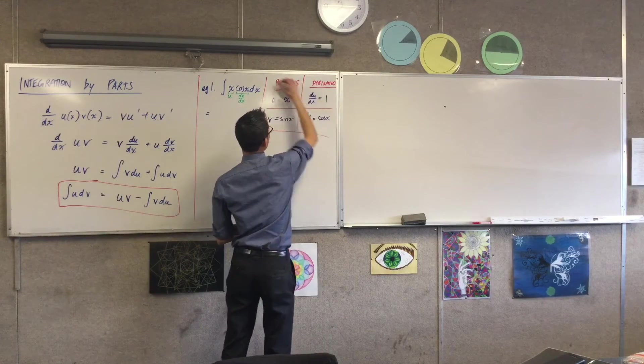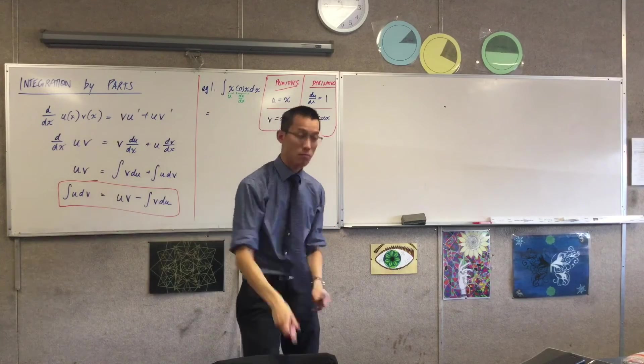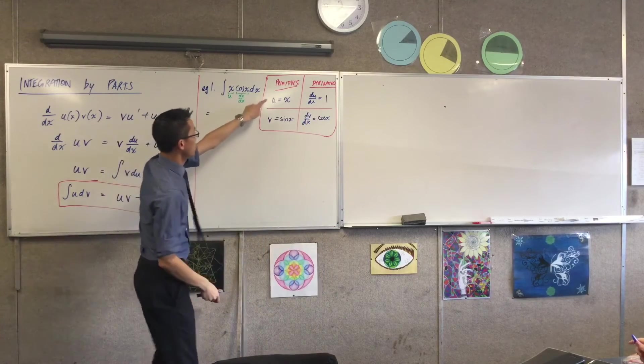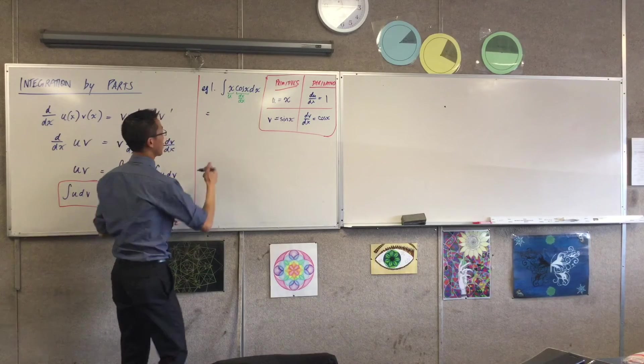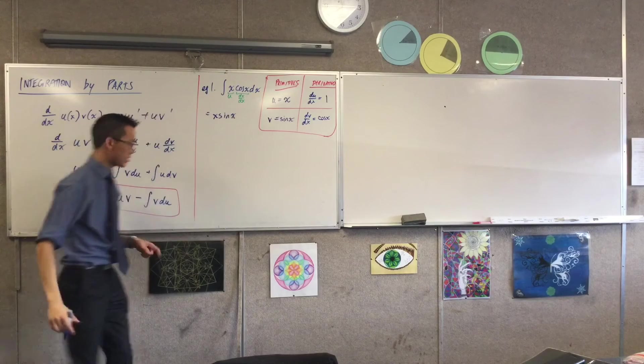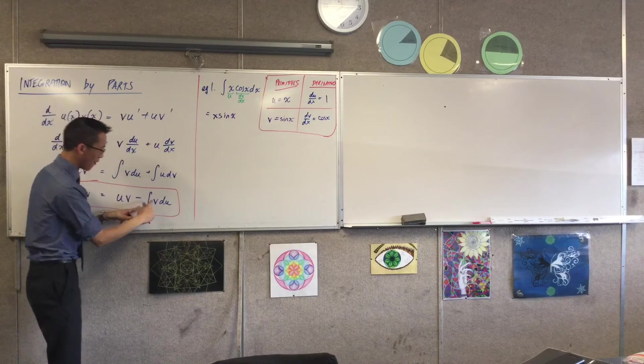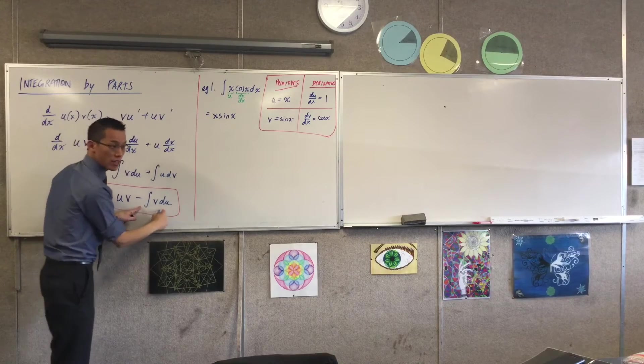What unfolds? Well, what is u v? U v. It's x sin x. So this is, I'm going to have just enough space. x sin x. That's the u v part. Then you subtract the integral of v times du/dx dx.